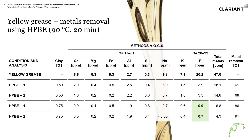Here's another example looking at some high-performance bleaching earths — using a lot more acid, temperature, and pressure to really increase that surface area. It took about 0.75% by weight treatment to remove phosphorus that started at 20 parts per million down to less than one part per million. You also had a total metal removal of 91%, so you're really protecting that catalyst and preventing those contaminants from reaching it.